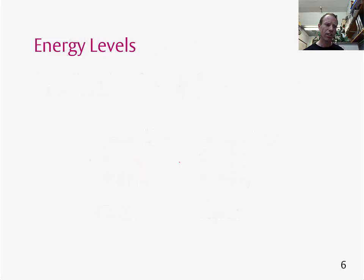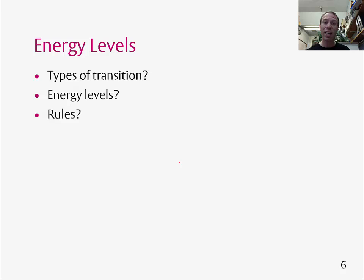I've introduced absorption and emission and scattering, and I've talked about energy levels, initial levels and final energy levels, but I haven't said anything about what these are. There are all sorts of types of energy levels in molecules, and so there are all sorts of types of transition. We've got to think about the energy levels, the transitions, and the rules which say whether these transitions are allowed or not.